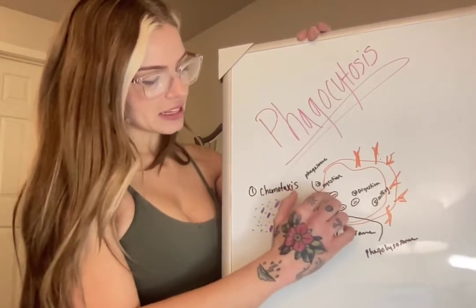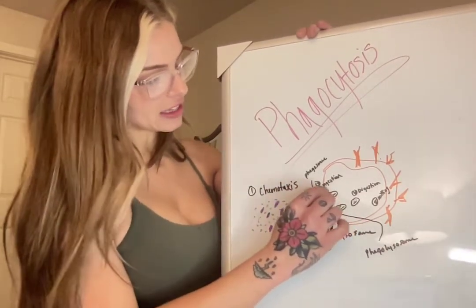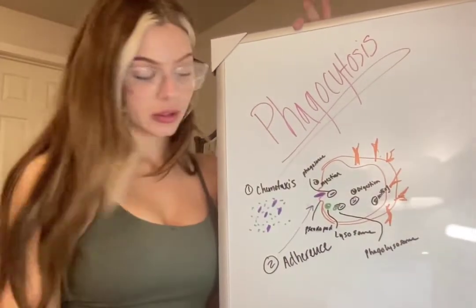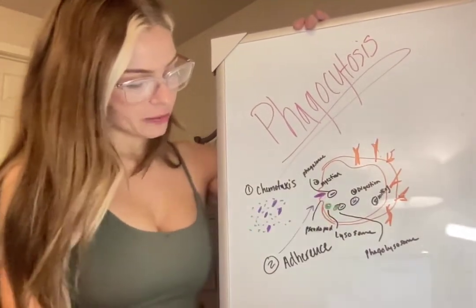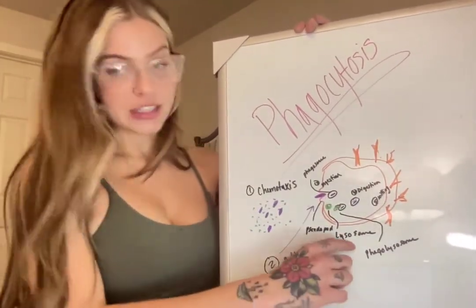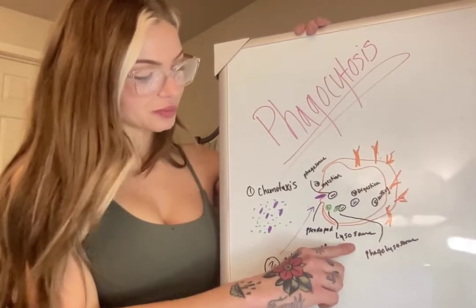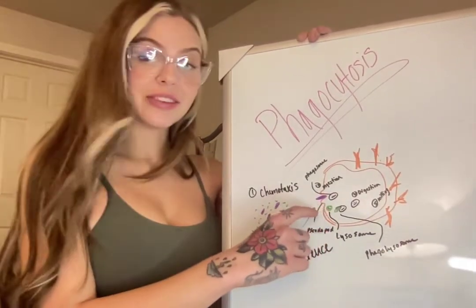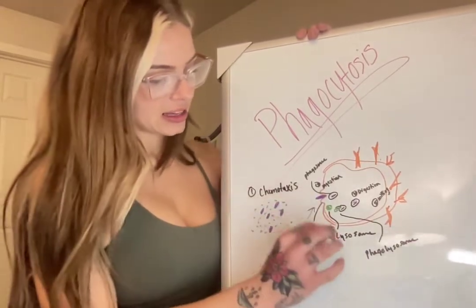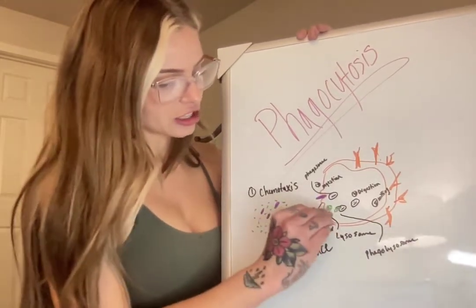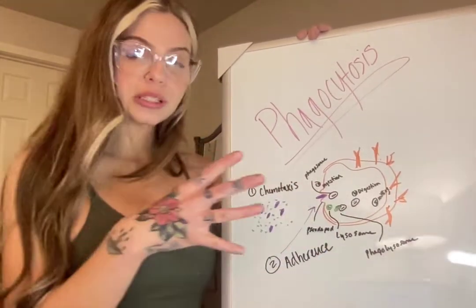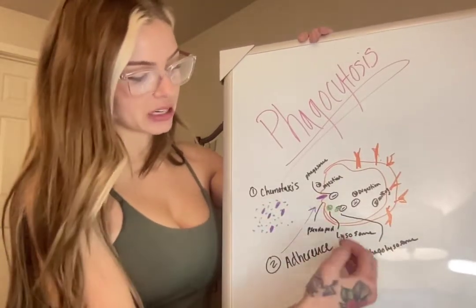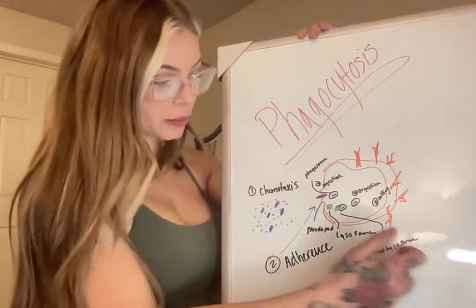Once the pseudopods are wrapped around the microbe and it brings it into its body, it's going to be in this little pod, and this is now considered a phagosome that has the microbe in it. A lysosome is going to come out — the lysosome has digestive enzymes in it — and the lysosome is actually going to fuse with the phagosome, and now it's going to be considered our phagolysosome.